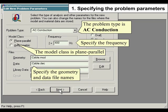The problem type is AC Conduction. The model class is Plane Parallel. Specify the frequency. Specify the geometry and data file names.